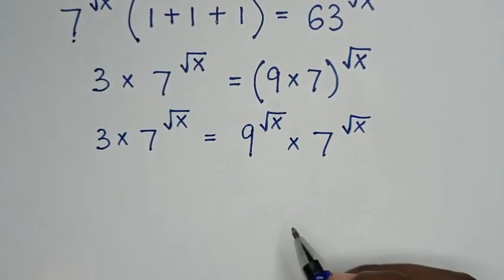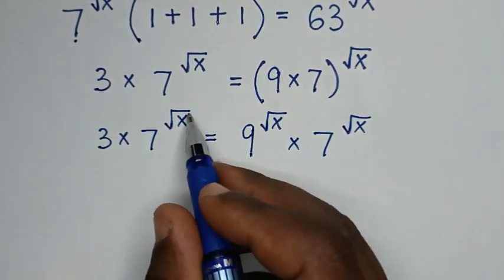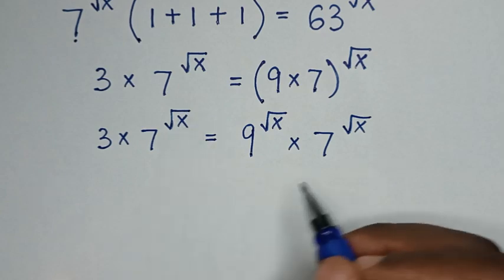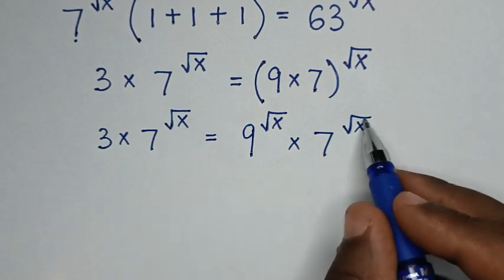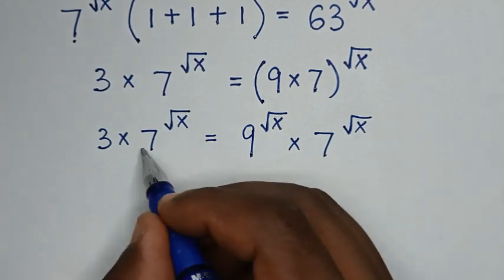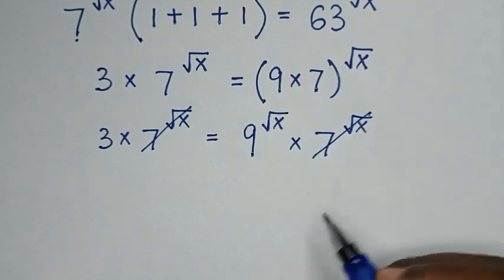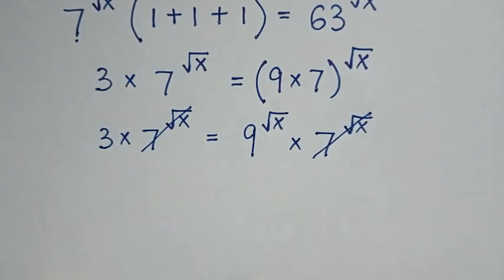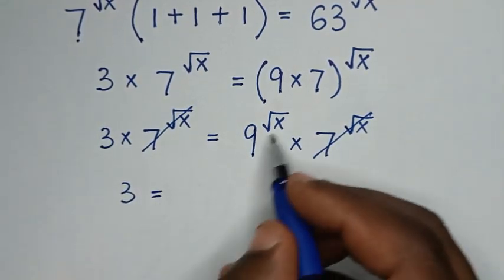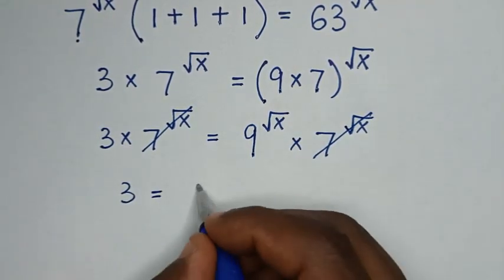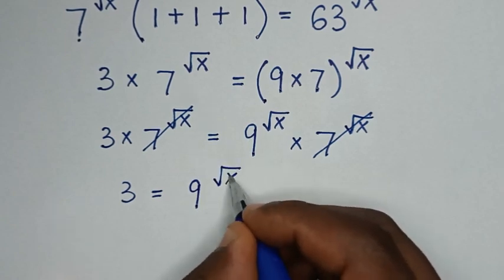In the next step, 7 power square root of x appears on the left side and also on the right side. So these will cancel each other. Then, it will be 3 is equal to 9 power square root of x.